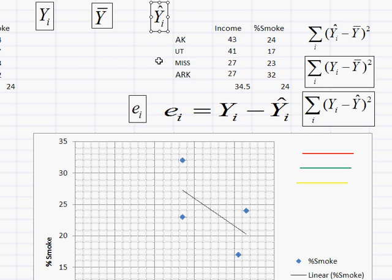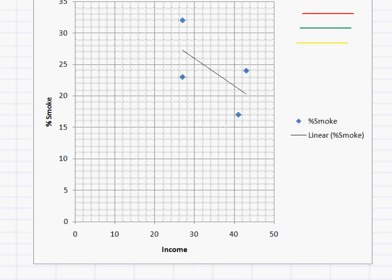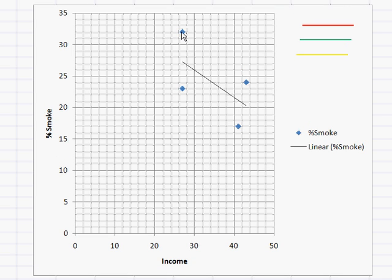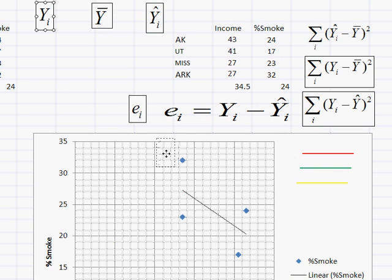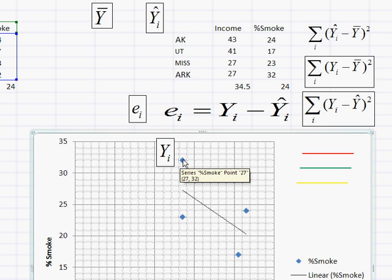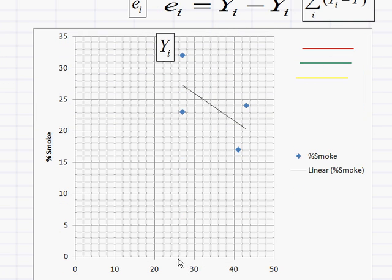Now, the y-hat i just asks us, what does our line predict that the value of a percent smoking would be? Now, you can get that from an equation, or you can just look at the actual line. And so I'm going to look at these in the scatter plot. These blue dots are the yi's, the actual data. So I'm going to bring yi, and I'm going to put it next to one of those blue dots. And we're just going to focus on this one, which is 32, which is actually Arkansas.